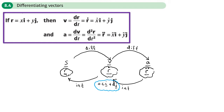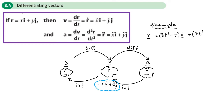We'll do an example so you can see what I mean. Let's say we had a displacement vector which was (3t² − t)i + (7t³ − 3)j, and we want to find the velocity vector.